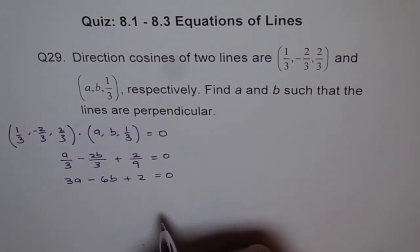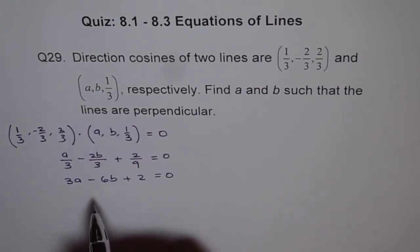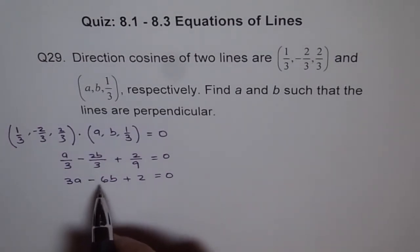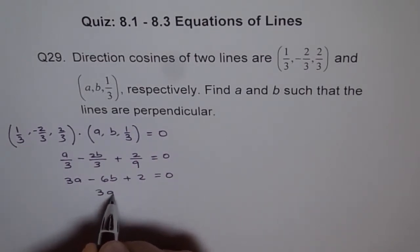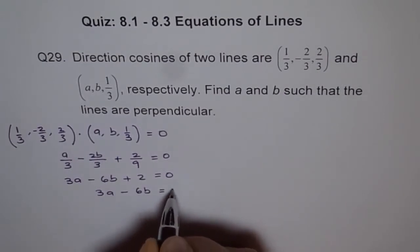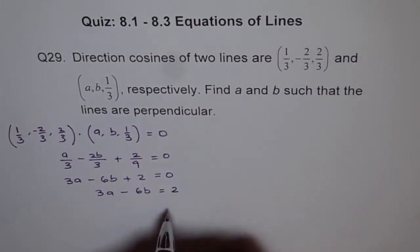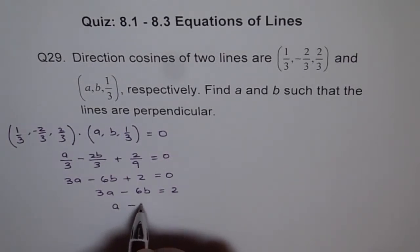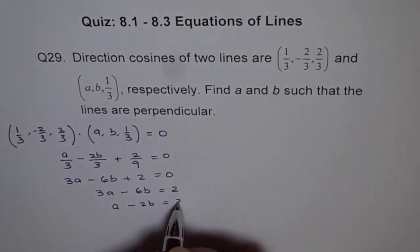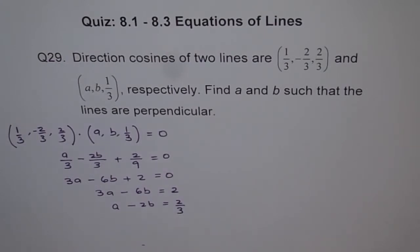From here we can write an equation in terms of A and B. We divide by 3: A - 2B = 2/3. So we get A in terms of B and a number. Let's call this Equation 1.